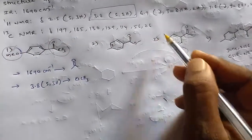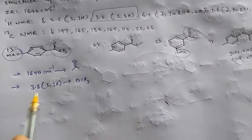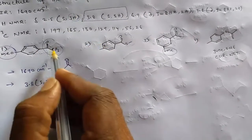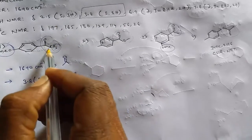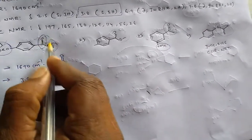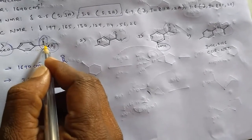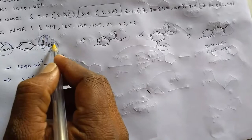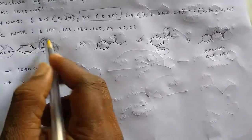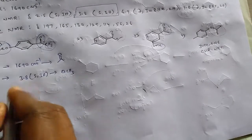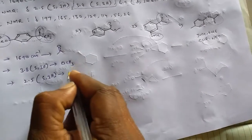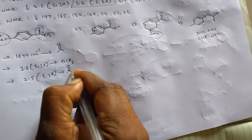Now δ 2.5 singlet (3H) — three hydrogens with no adjacent protons giving a singlet. At 2.5 ppm, if the methyl group is adjacent to the carbonyl group, the electronegative carbonyl oxygen attracts electrons towards it, causing the methyl protons to be deshielded, hence a downfield shift to δ 2.5.